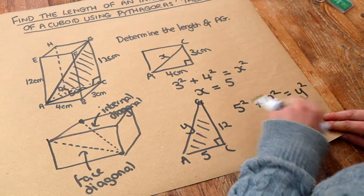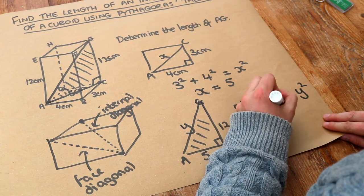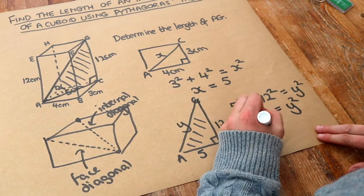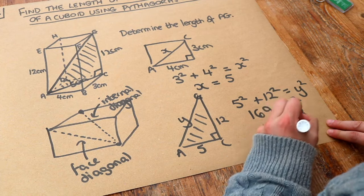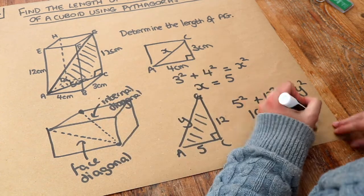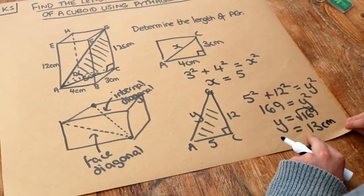And if you do 5 squared plus 12 squared that's 169. We just square root both sides. So Y is equal to 13. And the unit is centimetres. So that is the final answer.